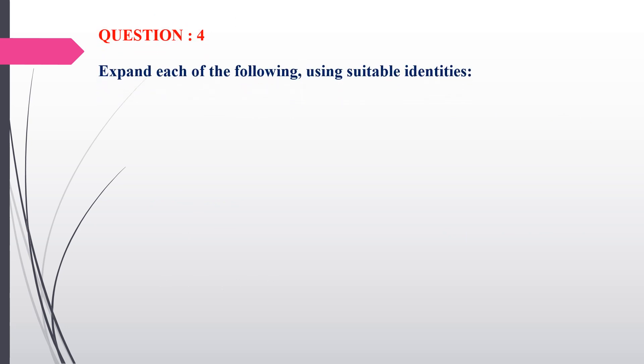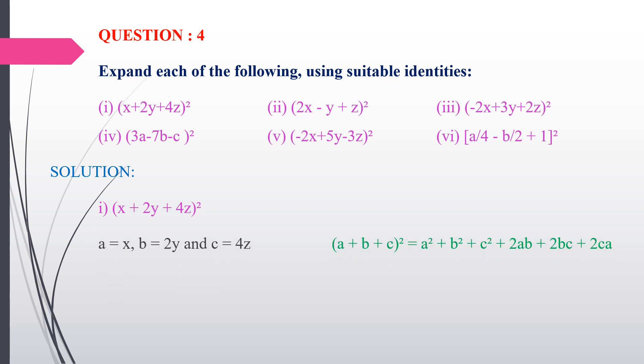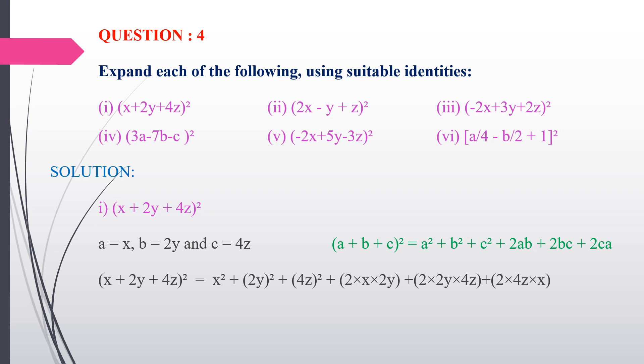Fourth question: expand each of the following using suitable identities. There are 6 subdivisions; I will do 3 for you. First subdivision: (x + 2y + 4z)². We use the identity (a + b + c)² = a² + b² + c² + 2ab + 2bc + 2ca, where a = x, b = 2y, c = 4z. Applying: x² + (2y)² + (4z)² + 2(x)(2y) + 2(2y)(4z) + 2(4z)(x). The answer is x² + 4y² + 16z² + 4xy + 16yz + 8xz.